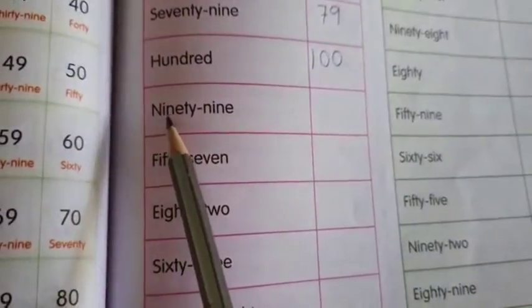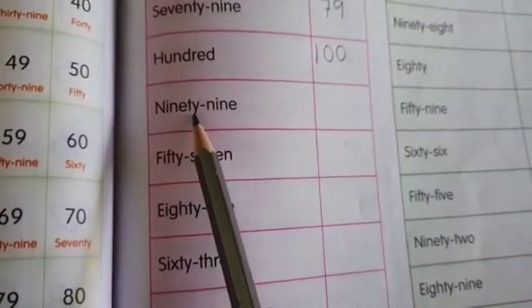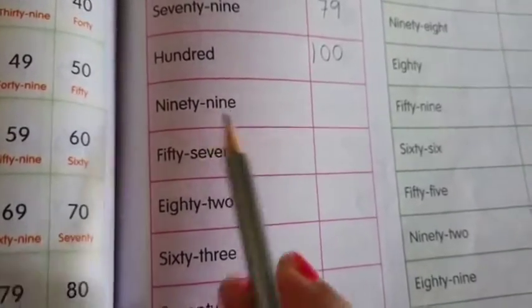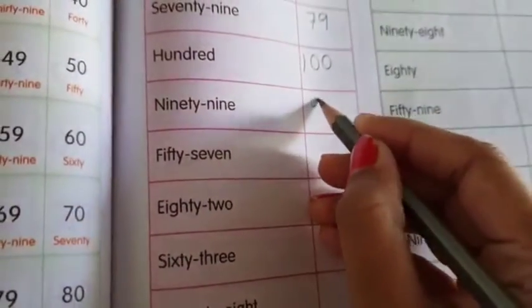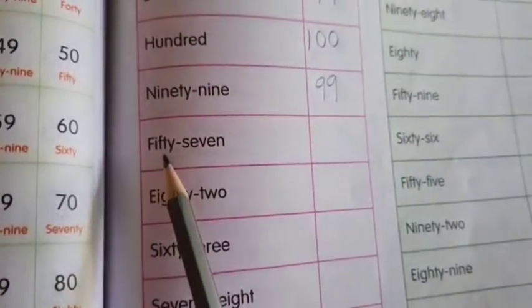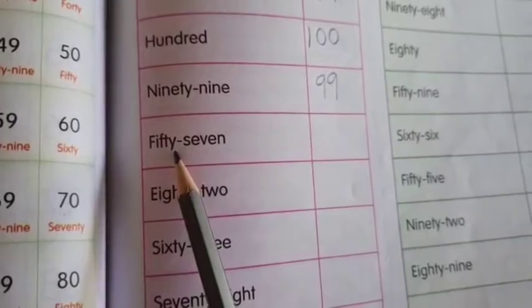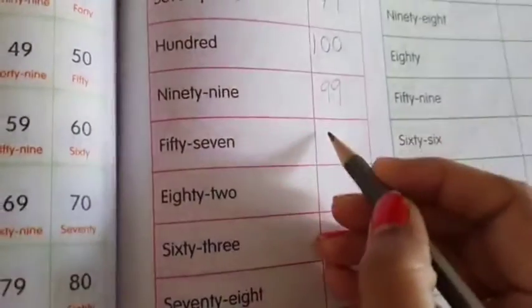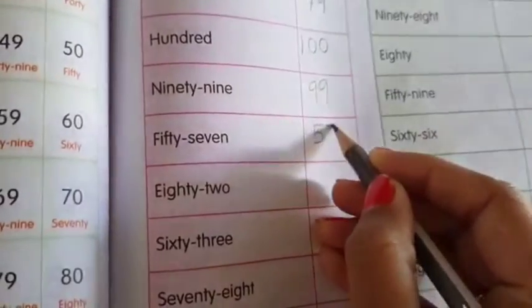Next, NINETY 90 NINE 9. Ninety-nine. So, 99. FIFTY 50 SEVEN 7, 57.